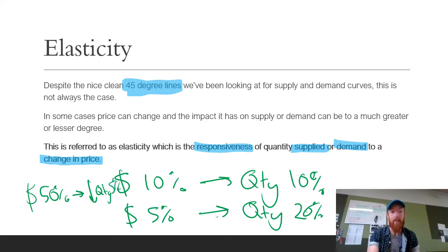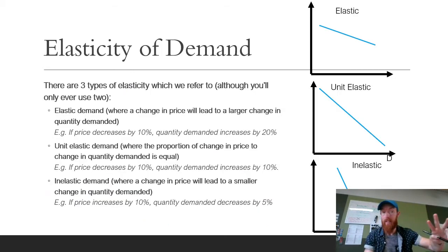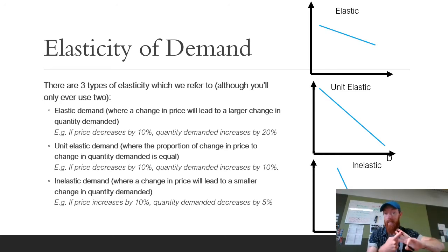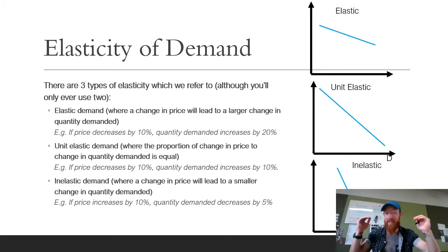With elasticity of demand, there are three main types. There's elastic demand, unelastic demand, and inelastic demand. You'll only ever really use elastic demand or inelastic demand, as unelastic is purely theoretical because there's rarely a product where the change in price is exactly the same as the change in quantity.